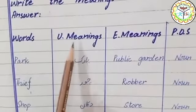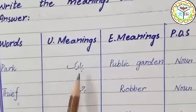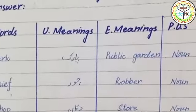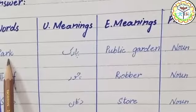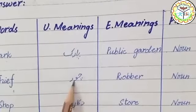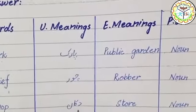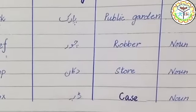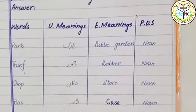Students, divide your notebook into four parts: words, Urdu meaning, English meaning, and parts of speech. Park — park, public garden — noun. What is a noun? Noun is the name of a person, place, or thing. So park is a place name. Shop — dukaan, store — noun. Box — dibba, case — noun. I hope you understand. We will meet soon with the next lecture. Allah Hafiz.